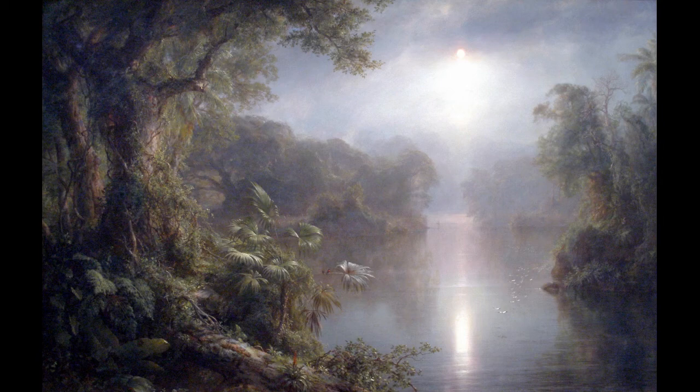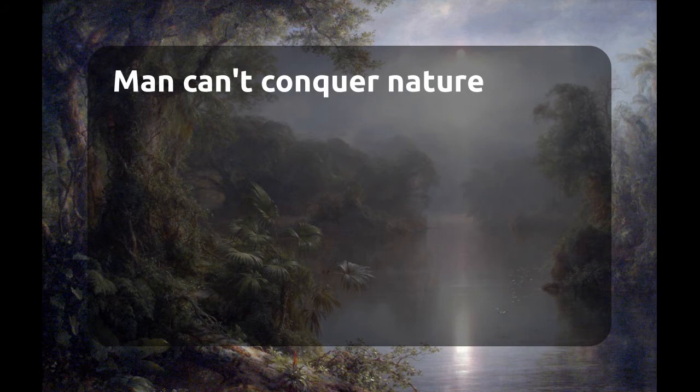In Frederick Edwin Church's 1877 painting El Rio de Luz, Church shows the beauty of nature itself, the relative smallness of humans, and the vastness of the unknown. The painting, based on notes and sketches from an 1857 trip Church made to South America, shows surprising realism and unity. This painting embodies the romantic idea that man can't conquer nature, using the beliefs of nature's perfect beauty, the vastness of the unknown, and the smallness of man.